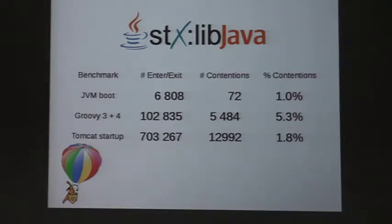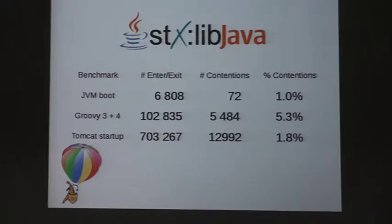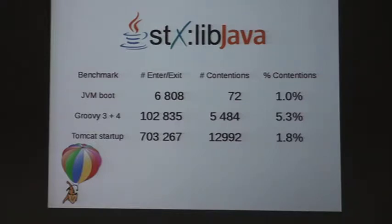Starting Apache Tomcat servlet container: 700,000 lock operations, but again the percentage where there was actual contention — where you essentially need to lock — is very small. The key insight is that you need to lock to guard yourself; that was one of Java's design decisions. You need to make a library thread-safe, so you need to lock, but because you lock so much, you have to lock very fast.